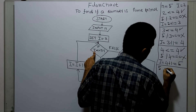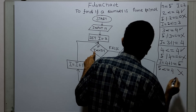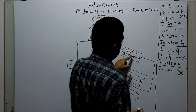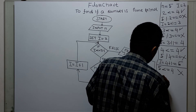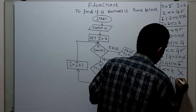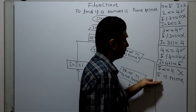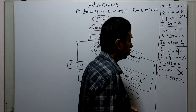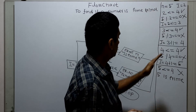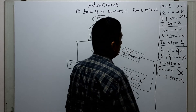Now checking the condition: five less than or equal to n minus one, which is four — the condition is false. We come out of the loop and print n is prime. Print: five is prime. Five is indeed a prime number, only completely divisible by one and itself. The flowchart works correctly for a prime number.